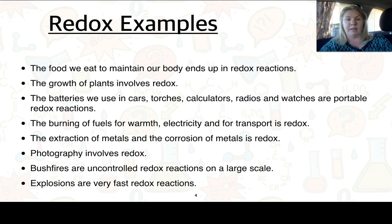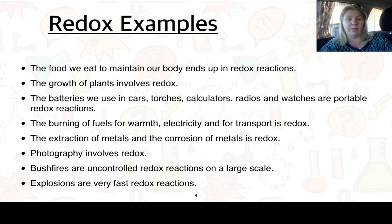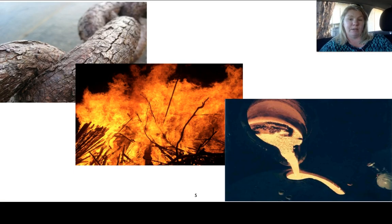Here's a list of some examples. We can look at the food we eat to maintain our body — that ends up in a redox reaction. The growth of plants involves redox. The batteries we use in torches, calculators, cars, radios and watches are all portable redox reactions. The burning of fuels for warmth, electricity and transport is also redox. Redox is also in the extraction of metals and the corrosion of metals. Photography involves redox, as do bushfires — an example of an uncontrolled redox reaction on a large scale — and explosions are a very fast redox reaction.